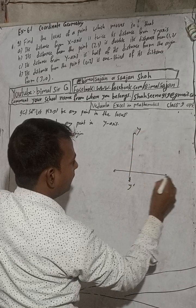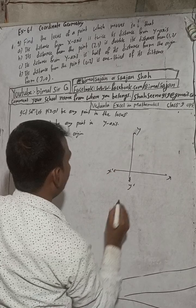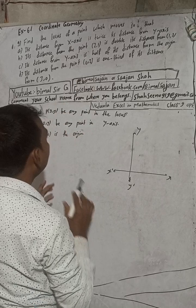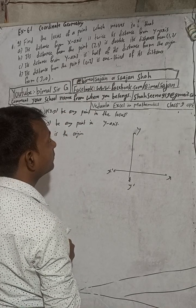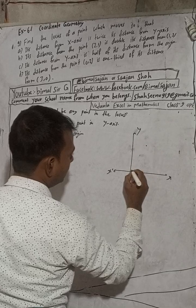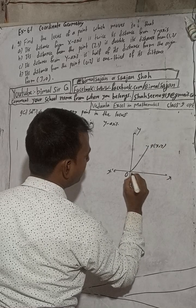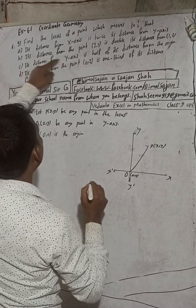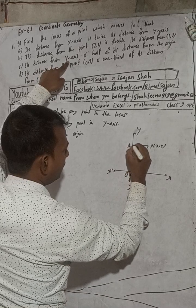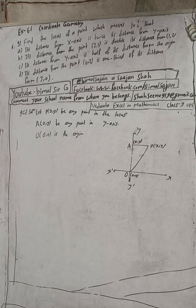Now in the figure, this is y, y-dash, x, and x-dash. Any point on the y-axis: the distance from y-axis is smaller, and the distance from the origin is more. So this is our point P(x, y), this is our origin O(0, 0), and the point on the y-axis is A(0, y).